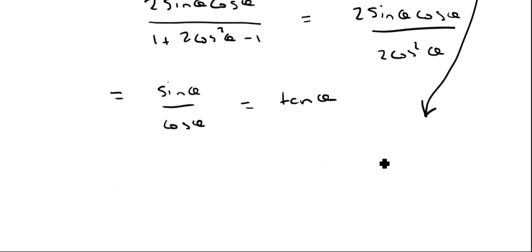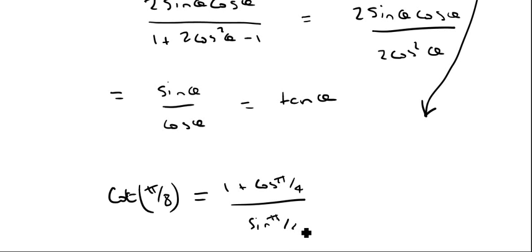Okay, and I think we'll then bring all this down here. So that's going to simplify, and that's going to give me cot π over 8 is equal to 1 plus cos π over 4, and then sine π over 4.